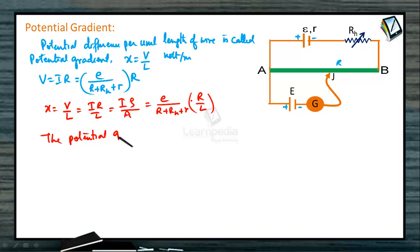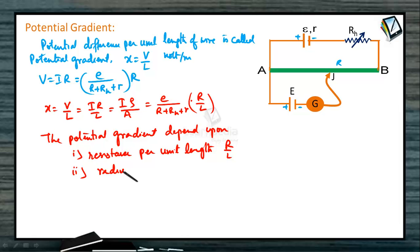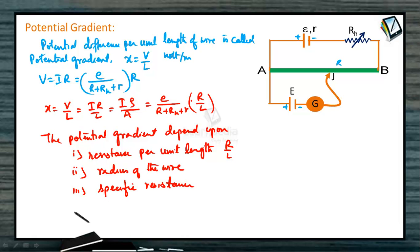The potential gradient depends upon: first, the resistance per unit length R/L of the potentiometer wire; second, the radius of the wire; third, the specific resistance rho of the material; and fourth, the current flowing through the potentiometer wire.